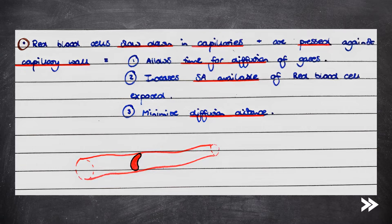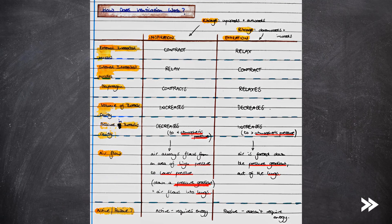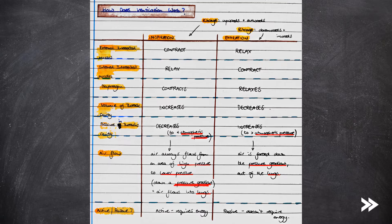Another advantage is that red blood cells slow down in the capillaries and are pressed against the capillary wall. This allows time for the diffusion of gases whilst also increasing the surface area of red blood cell available. And it also minimizes the diffusion distance for oxygen. Overall, this helps increase the rate of gas exchange. Finally, we need to consider how ventilation works.